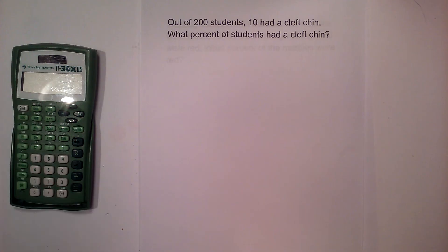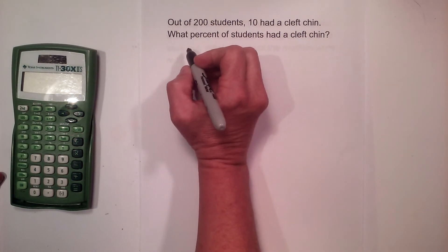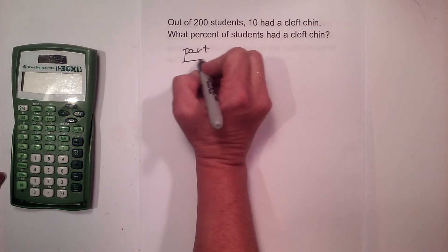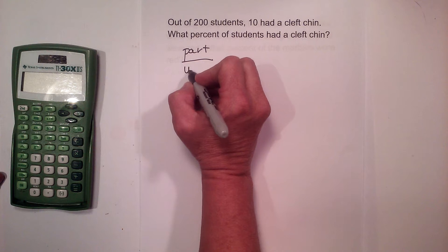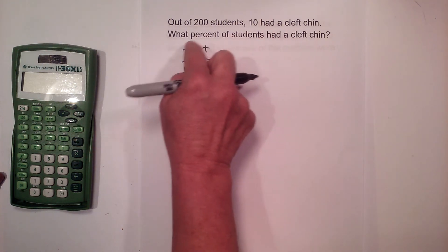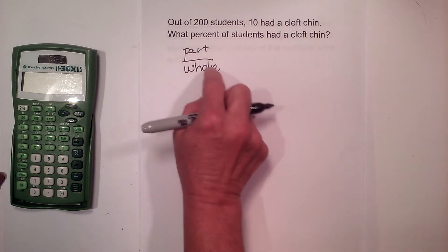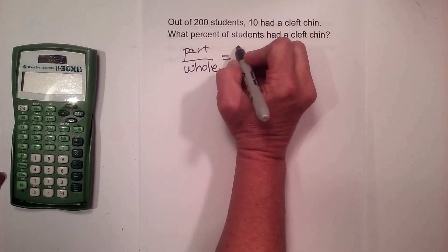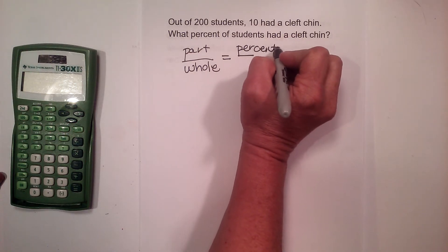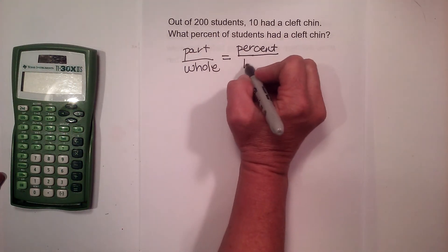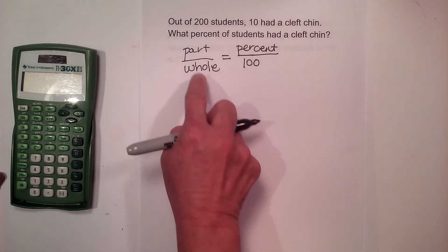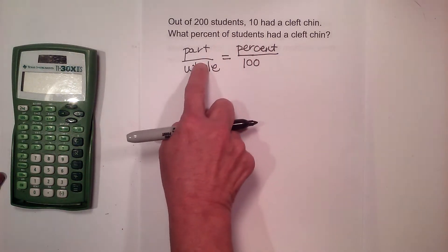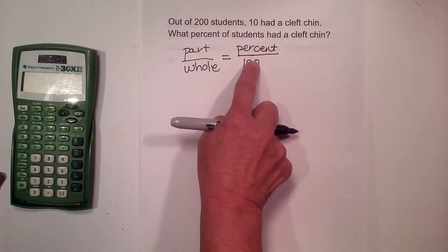Well for percentages we want to use this system. We want to put the part over the whole. So the part of the group versus the whole group and set that equal to your percent over 100. So this system is part over whole equals percent over 100, and then we can cross multiply because we have a proportion.